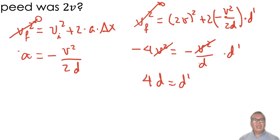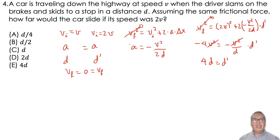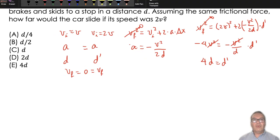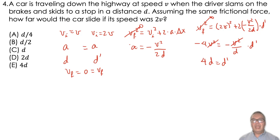In other words, if you have doubled the velocity, then the distance for stopping is multiplied times 4. And that is option E.